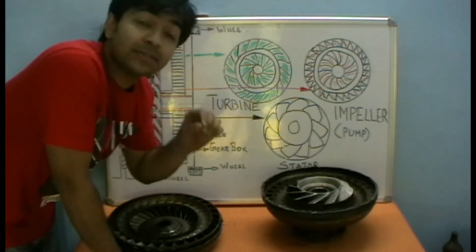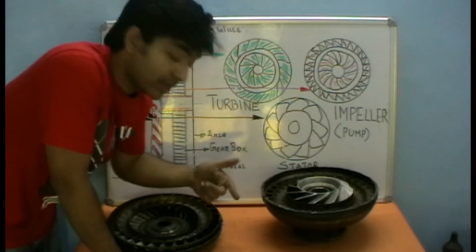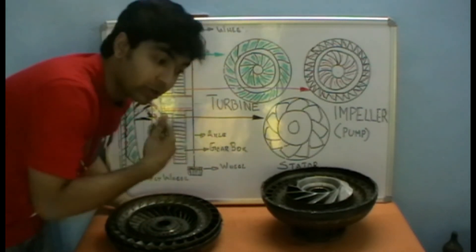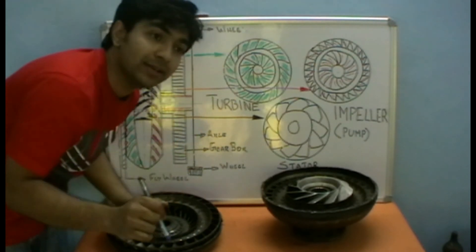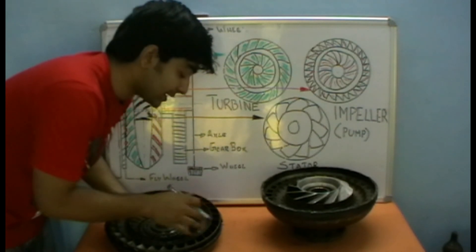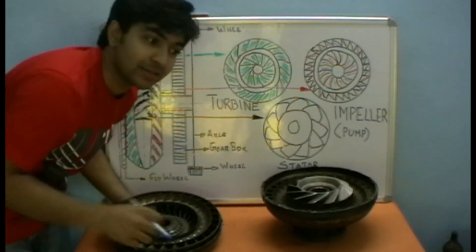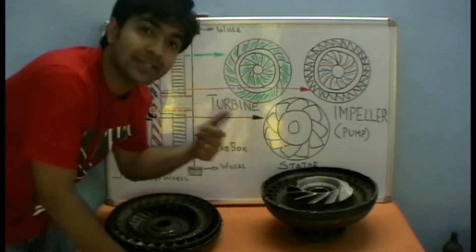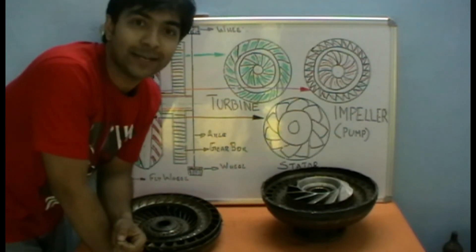When a vehicle is moving from a stop, maximum torque is stored in the turbine because the turbine is stopped when the vehicle is stopped, so torque gets accumulated on the turbine due to velocity addition. When the brake is released, the torque is released from there. Ultimately, velocity addition results in torque multiplication.